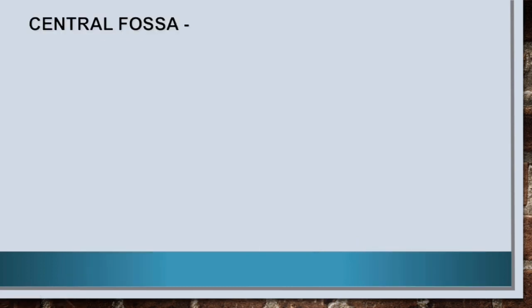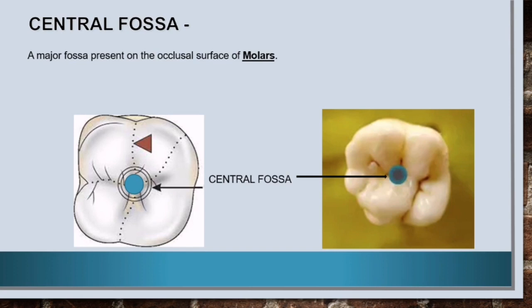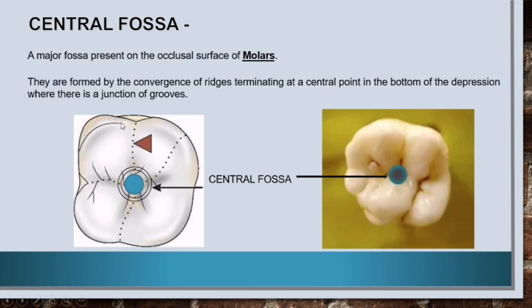Second is central fossa. It is a major fossa present on the occlusal surface of molars, and is formed by the convergence of ridges terminating at the center point in the bottom of the depression where there is a junction of grooves. We'll know about grooves later on in this video, and to know about ridges in detail you can watch the video on elevations on tooth surface.